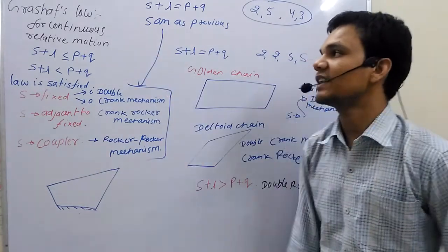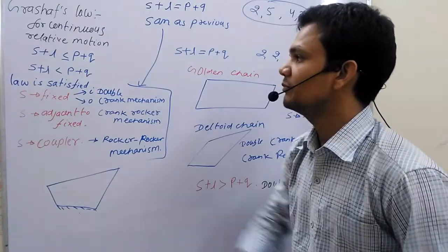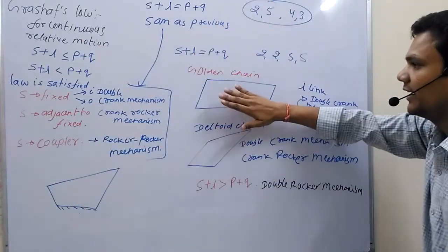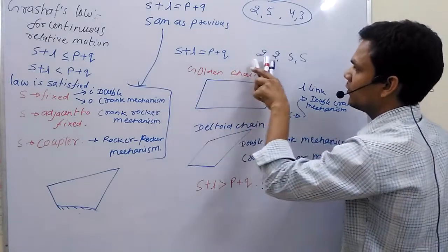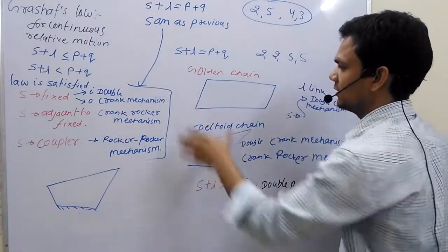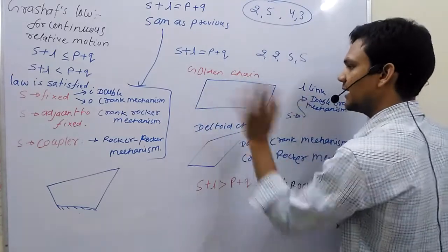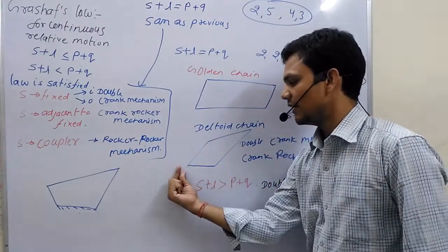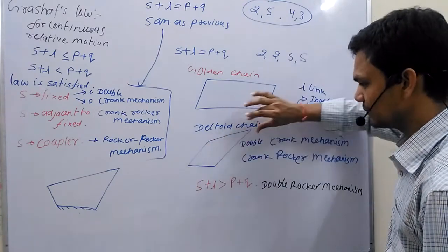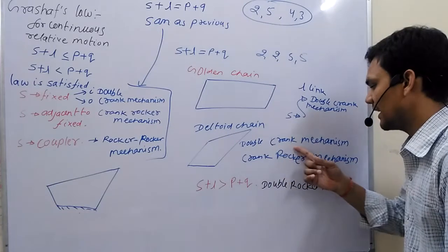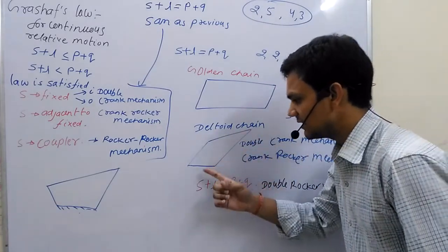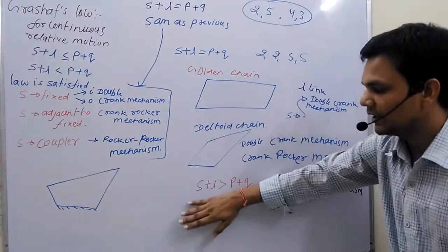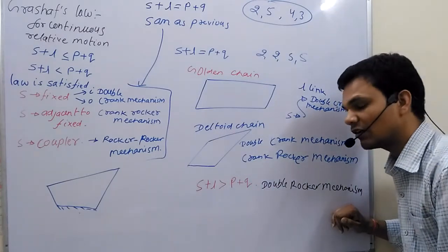So this is Grashof's Law: for continuous relative motion between links in a mechanism, the summation of the smallest and largest link must be equal to or less than the other two links. If the law is satisfied, these conditions occur. If equal-length links are all connected, you obtain a double crank mechanism for any fixed link. If the smallest and largest pairs are adjacent, fixing the smallest gives crank-rocker. If the law is not satisfied, you obtain a double rocker mechanism.